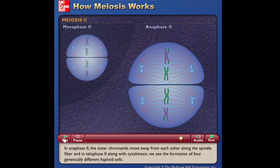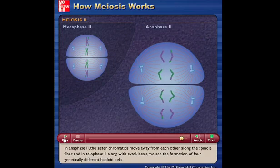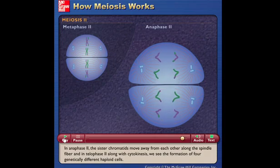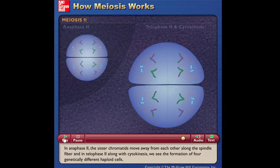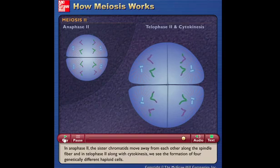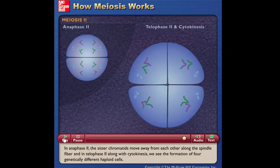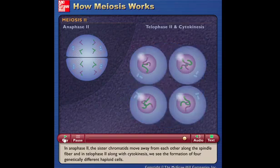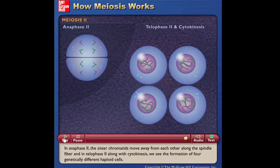In anaphase II, the sister chromatids move away from each other along the spindle fiber. And in telophase II, along with cytokinesis, we see the formation of four genetically different haploid cells.